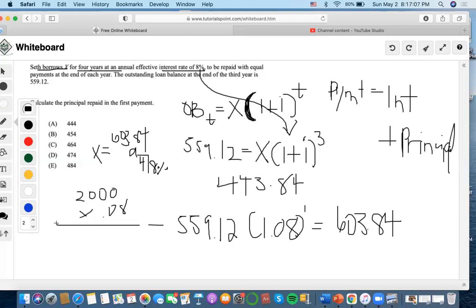$2,000 times 0.08 is $160. We want to find the principal repaid in the first payment, so we designated $603.84 as our payment of each year.